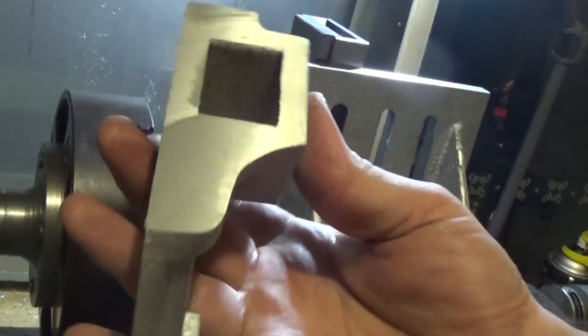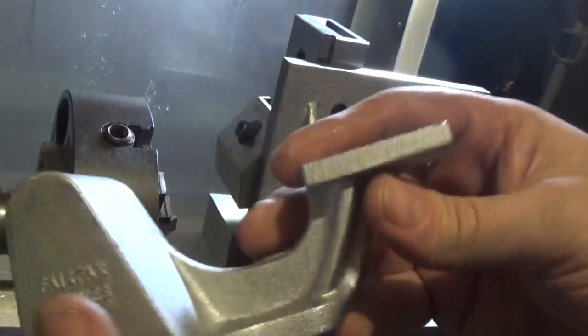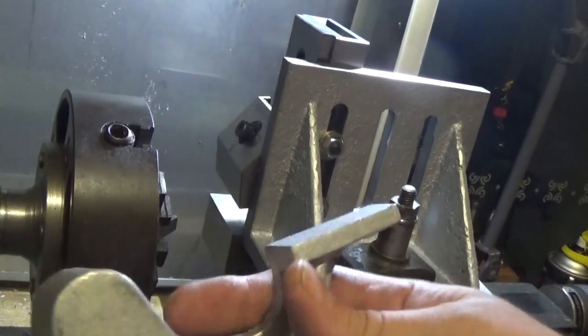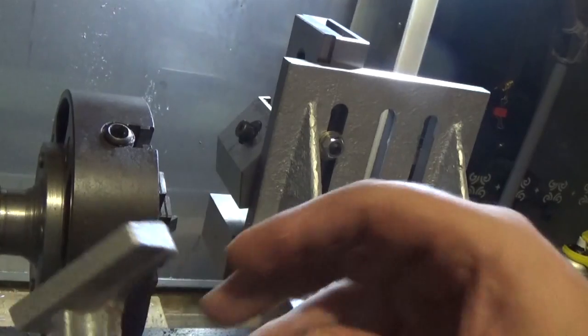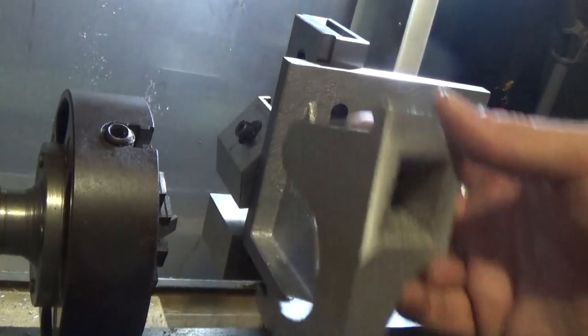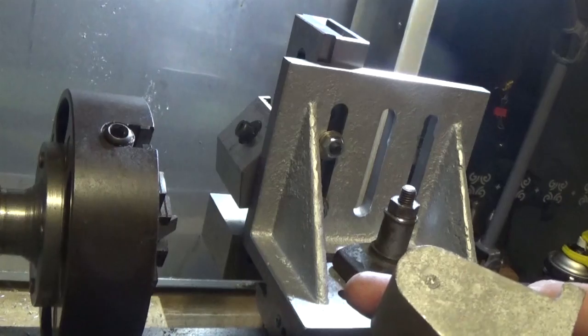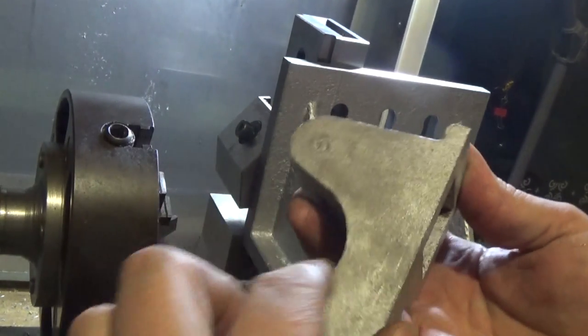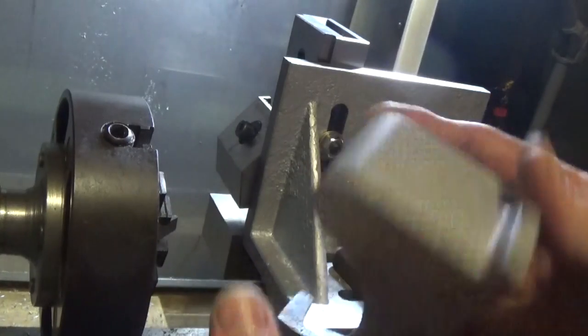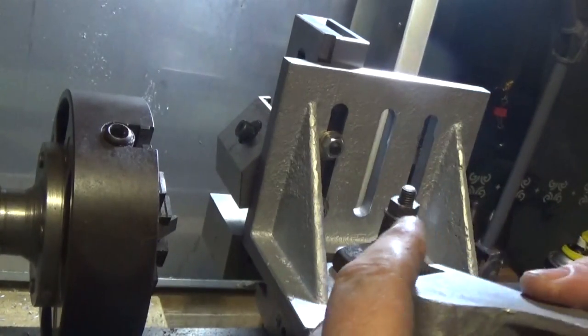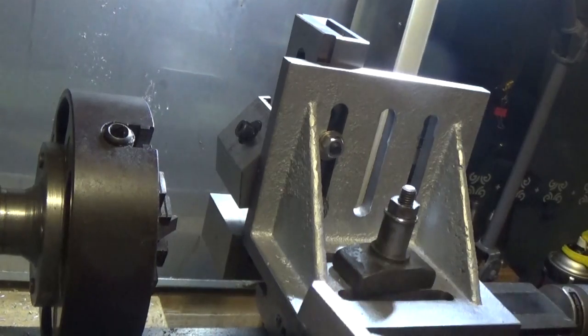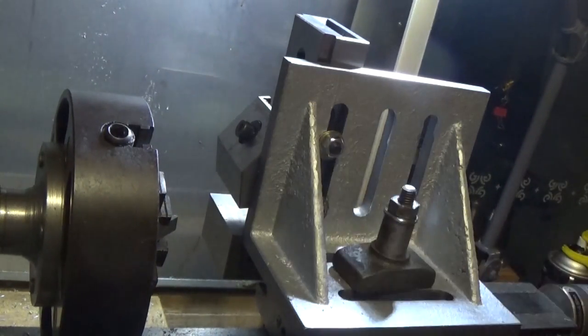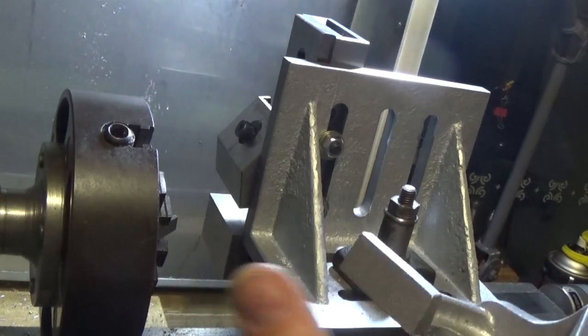And we've got the bottom there pretty well cleaned up. Next job I guess is to mark this one out. I might just bolt him up on the faceplate and drill him, it might be the best way to do that. This one here I think I'm going to probably bolt him onto the compound directly and face this side.